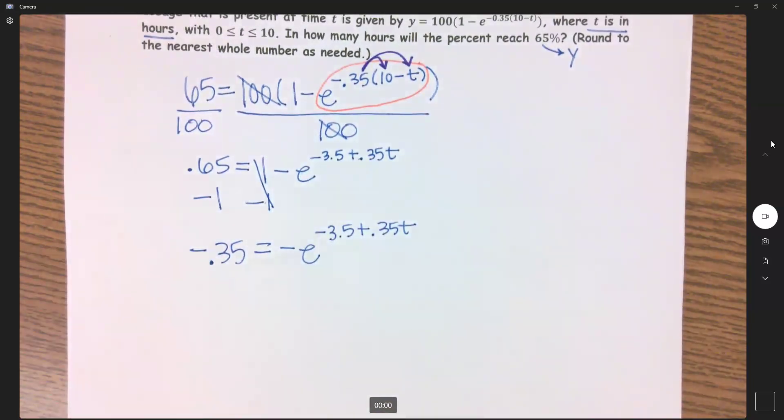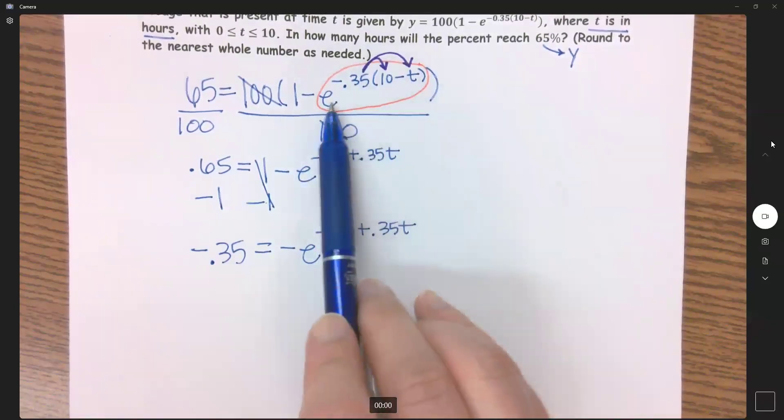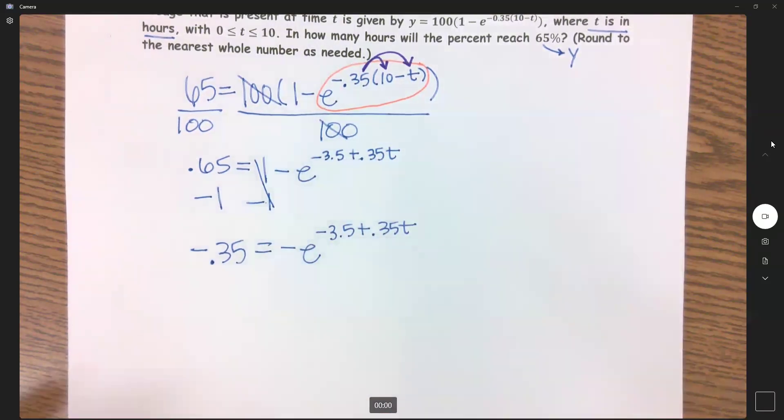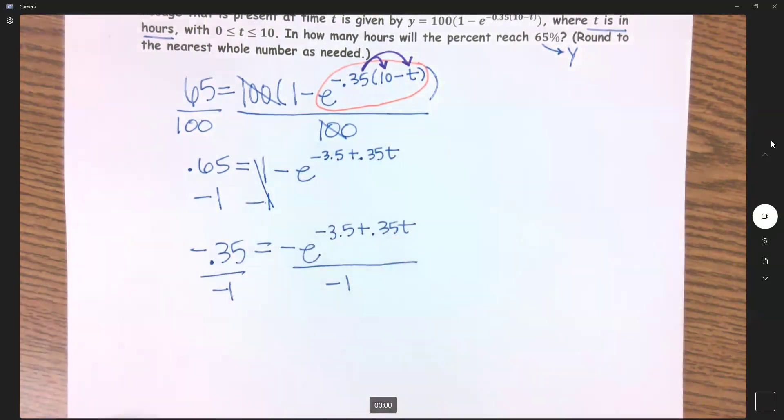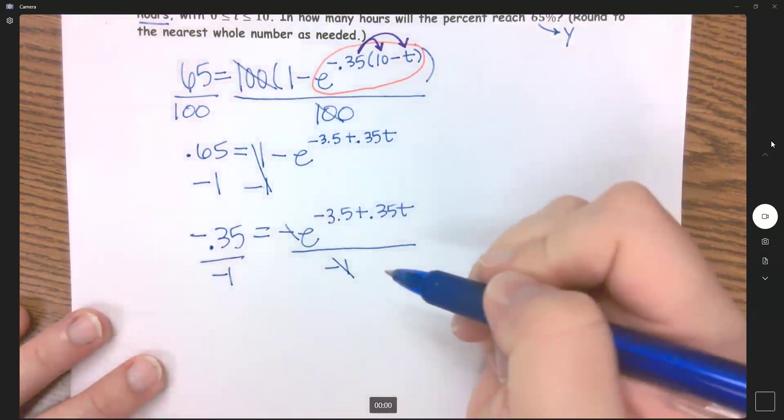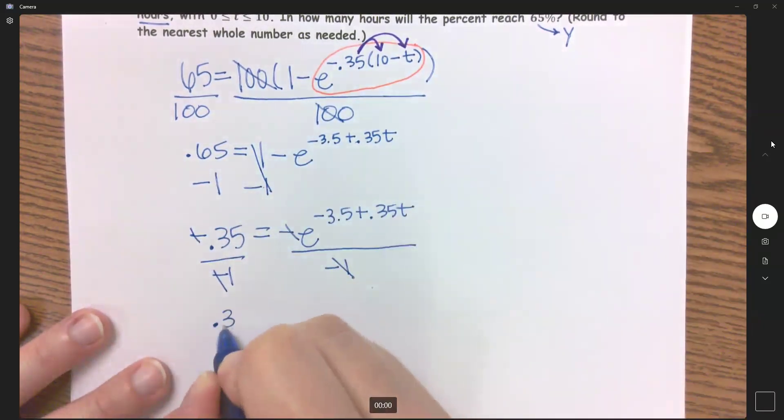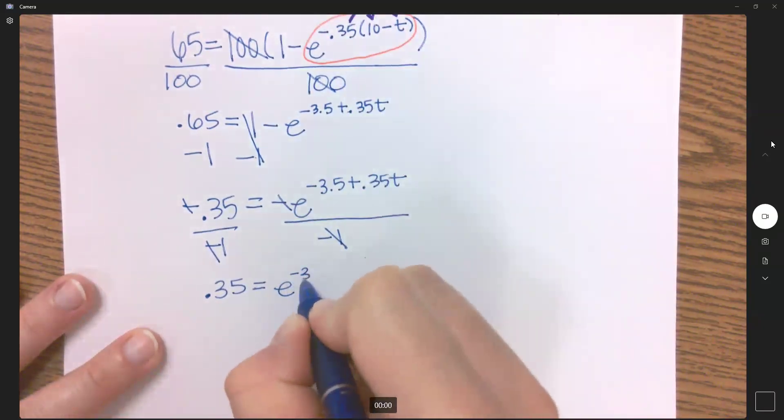I still have not isolated because when I circled this, my isolation involves a positive exponent. This is a negative exponent, so I either need to multiply or divide both sides by negative one. Negative over negative cancels, we're left with now positive 0.35 equals e^(-3.5 + 0.35t).